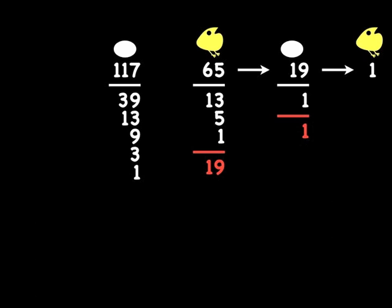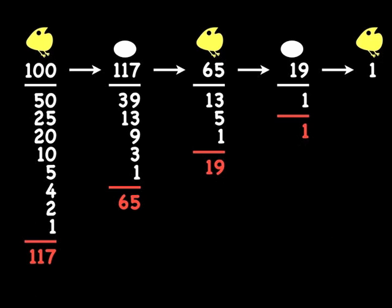So actually this is an egg sequence, right? Wrong! Because we can keep going back and ask: is there a chicken that could produce 117? Indeed there is — it's 100. So you can see it's very tough to answer: where does it all begin? Does it begin with a chicken or an egg?